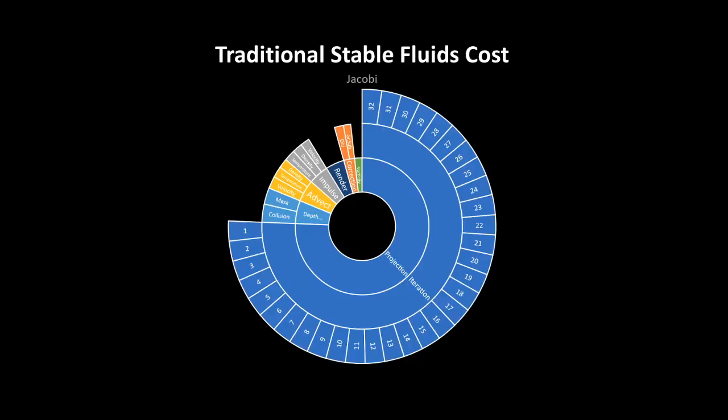How do we accelerate the pipeline? We build on Josh Stam's stable fluid algorithm. In the traditional pipeline, a big chunk of the computation is spent on a single projection step that uses iterative Jacobi solver.